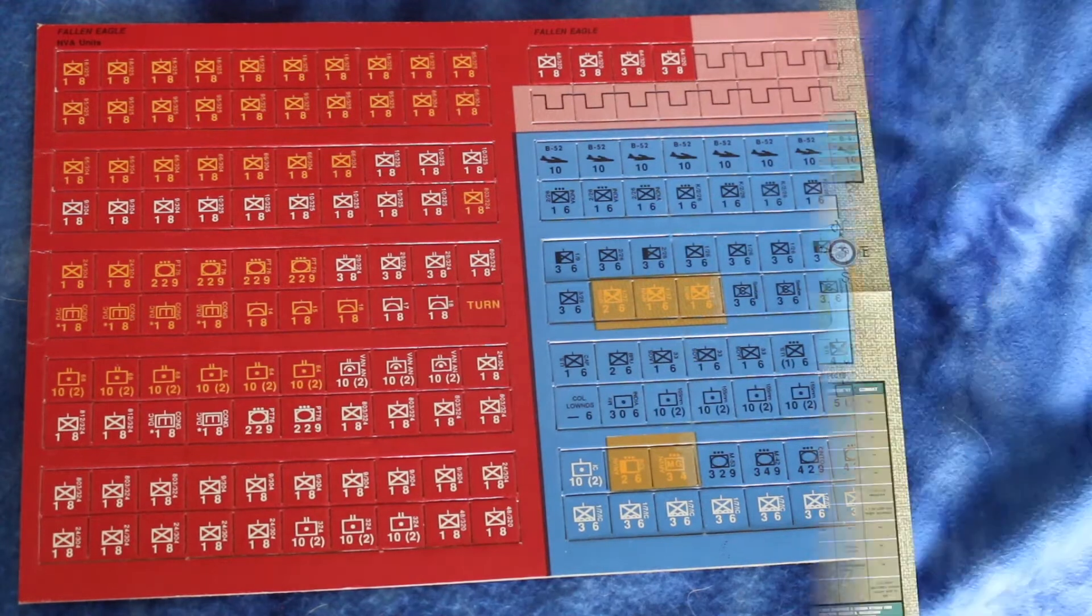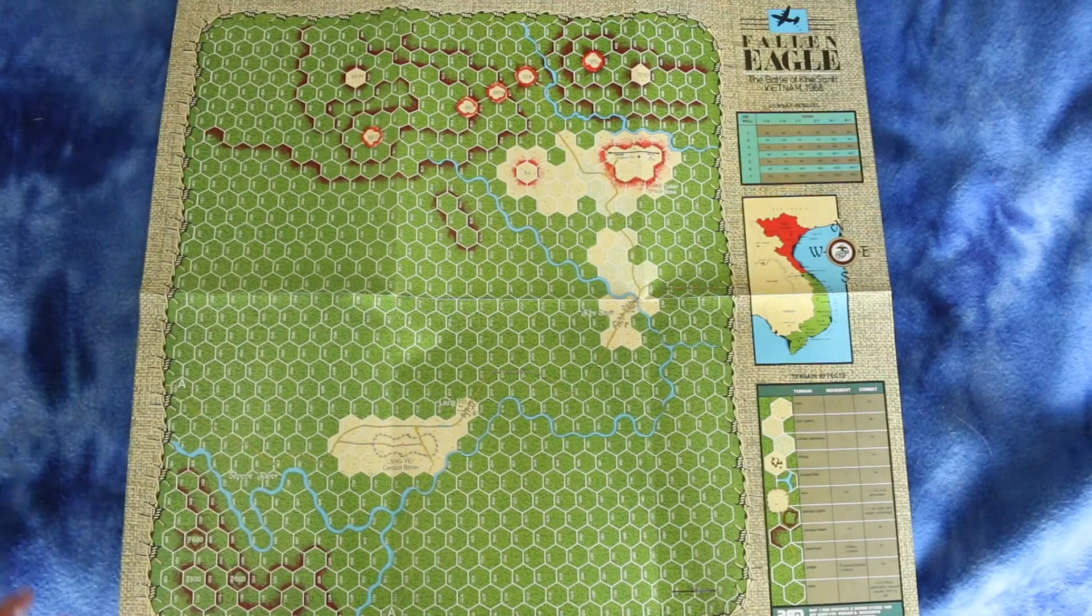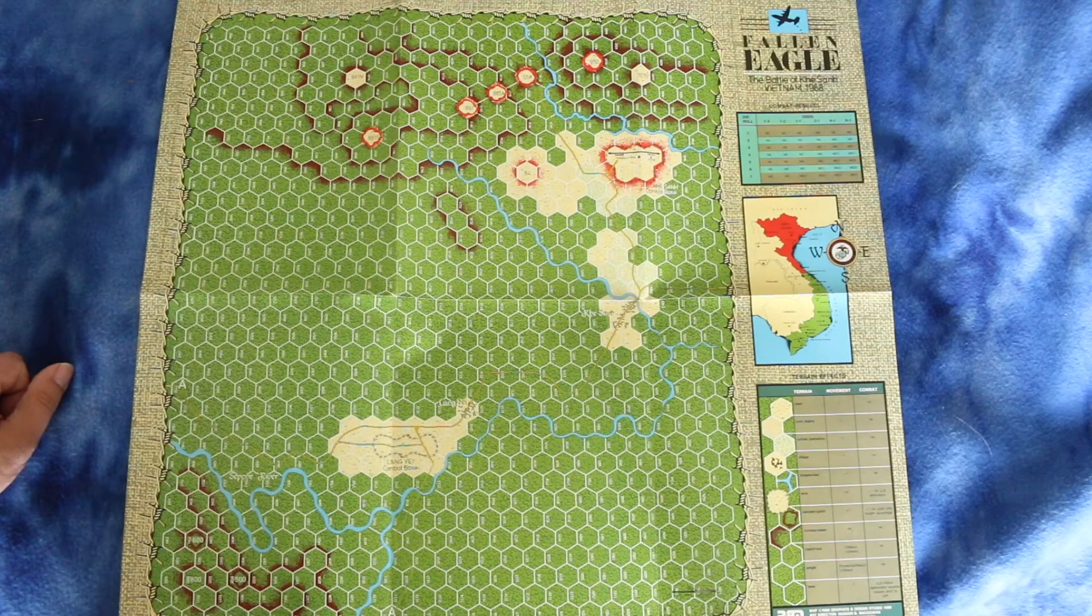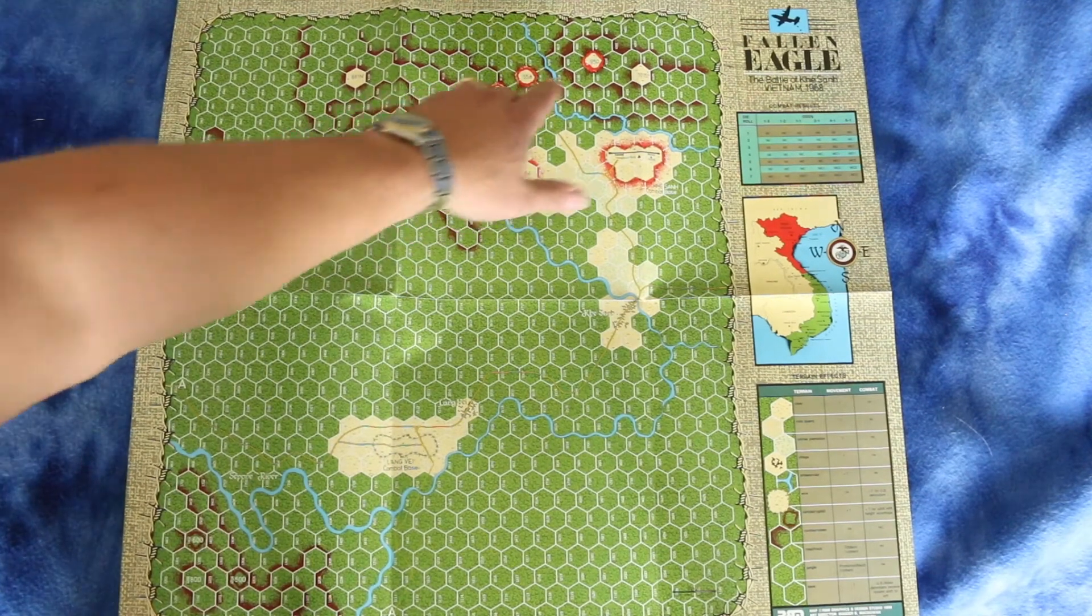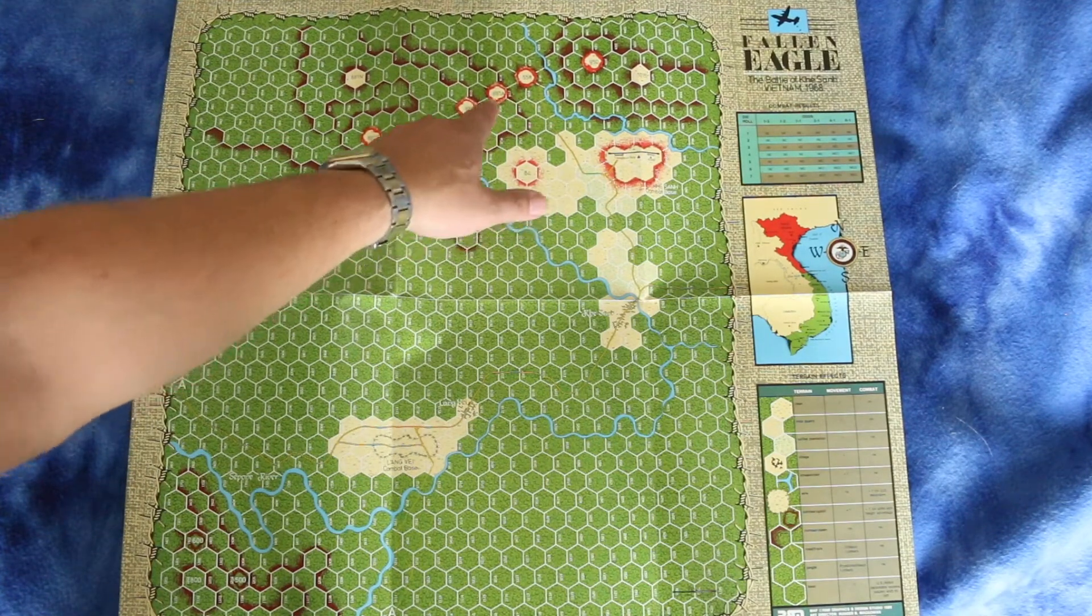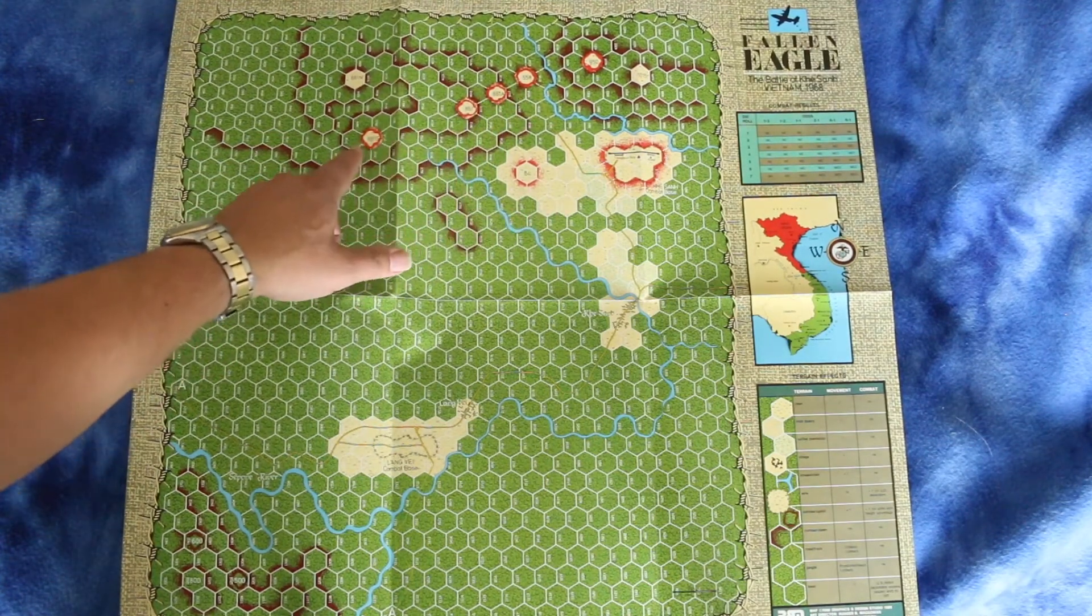Let's take a look at the map now. It's pretty simple map, actually. Here's Lang Vei down here, the Special Forces camp that was attacked with NVA armor.